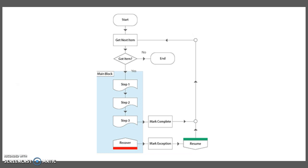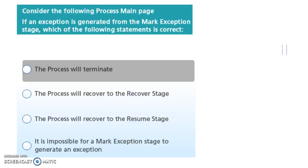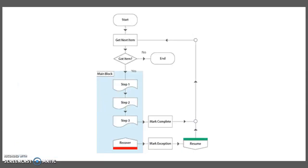You can see this diagram. This diagram starts with Get Next Item — it is the main block — and it's closed with Mark Complete and Recover and Resume with Mark Exception. This is the diagram. What is wrong with this diagram in the design? If an exception is generated from the Mark Exception stage, which of the following is correct?